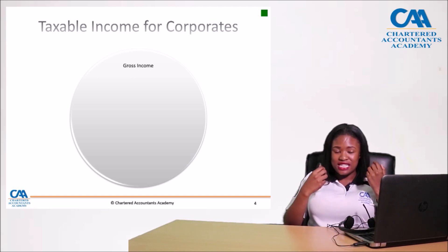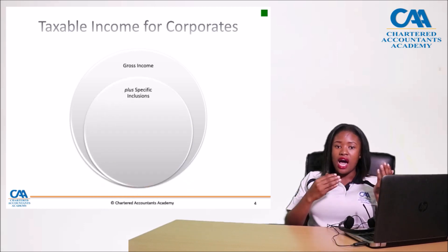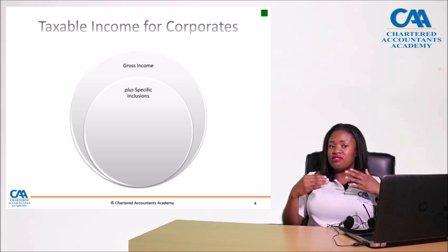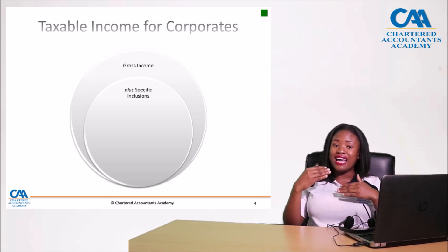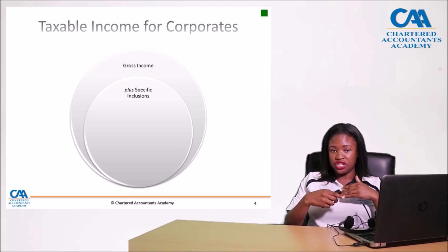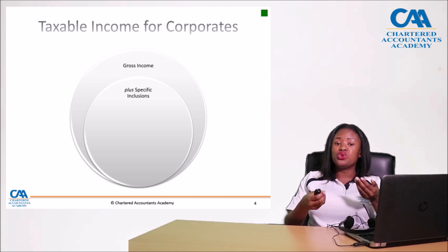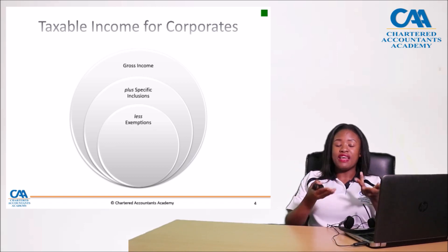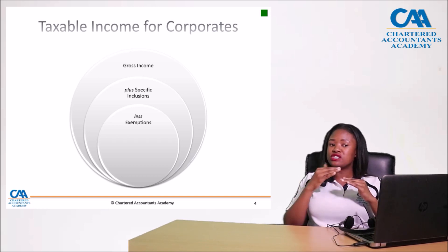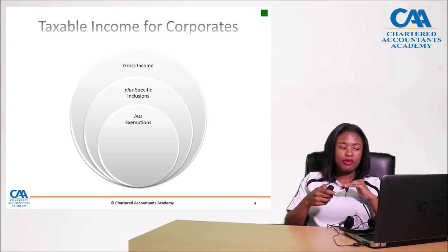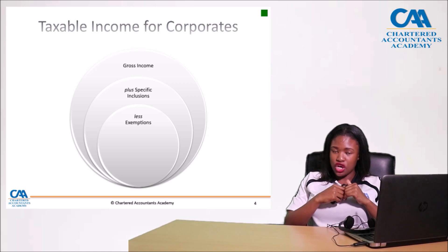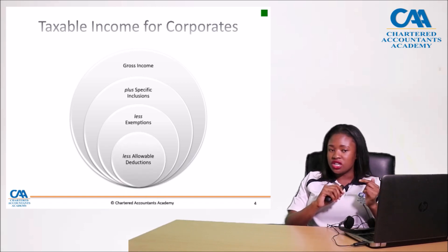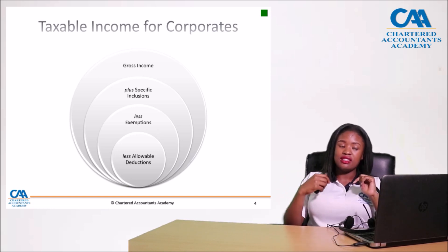We also include specific inclusions — those not covered by the general formula — where Section 8 of the Act specifies exact items to include over and above the general definition. We then exclude any exemptions, which is income that meets the gross income definition but is relieved from tax. Lastly, we deduct allowable deductions from the general deduction formula or specific deductions.